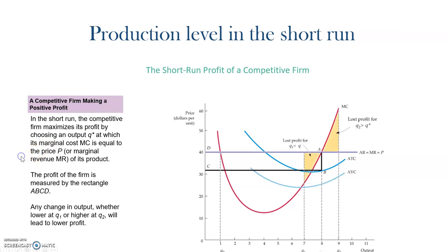To maximize the profits, we need to have two conditions. First, the price must equal to the marginal cost. And second, the slope of the marginal cost must be positive and not negative. In this situation, we should also pay attention to the fact that the average total cost is under the average revenue. We see that the average total cost is under the average revenue, so it means that we are having more revenues than costs when we produce 8 units. When we produce 8 units, we will have positive profits because the average total cost is under average revenue. The profits will be given by the difference between average total cost and average revenue, which is the area A, B, C, D.